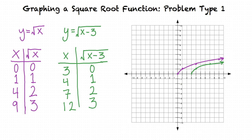If we compare both of these functions, we see that they have the same y values, but the x values associated with those y values are different. For example, if we choose x equals 1 for our original equation, y equals the square root of x, we obtain a y value of 1, which is the same y value we obtain if we choose x equals 4 in our function y equals the square root of x minus 3.